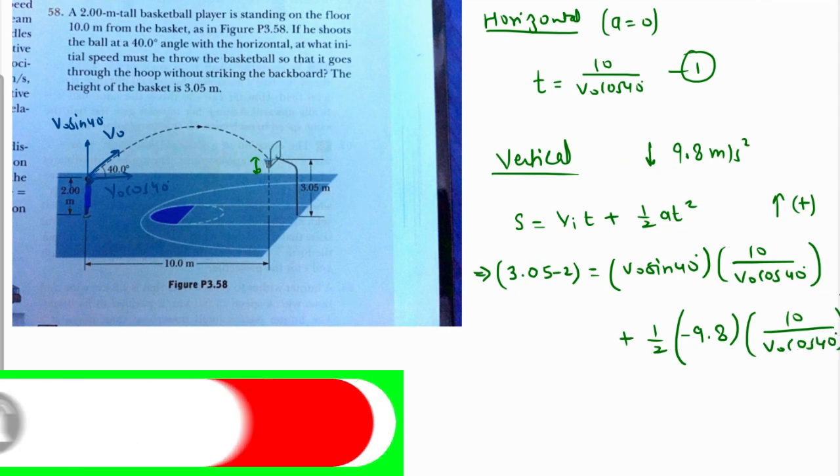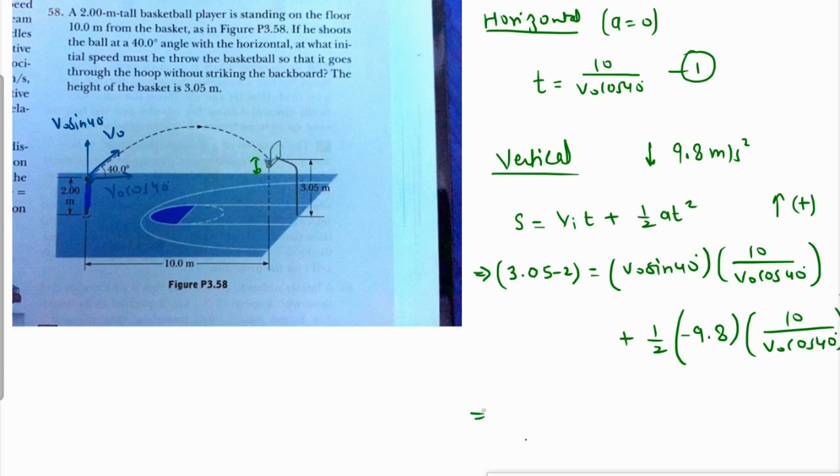3.05 minus 2 is 1.05. V naught and v naught cancel. Sine over cos is tan, so we are left with 10 times tan 40 degrees minus 4.9 times 100 over v naught squared cos squared 40 degrees. The only variable here is v naught, which is what we have to find.